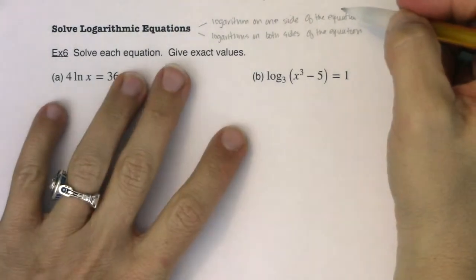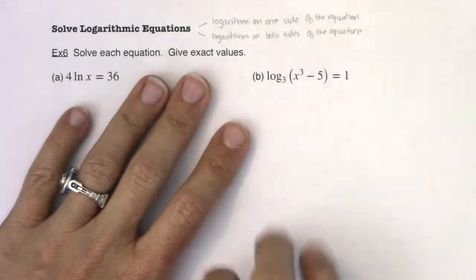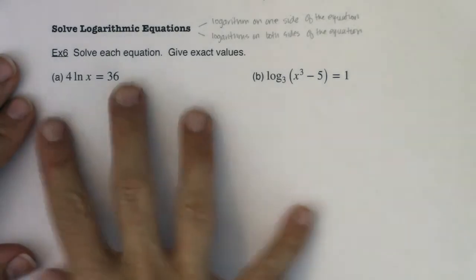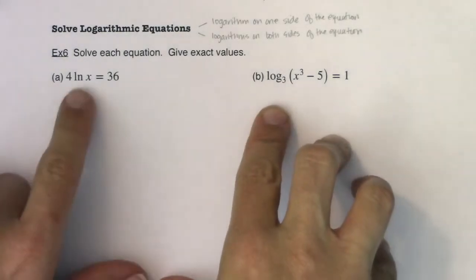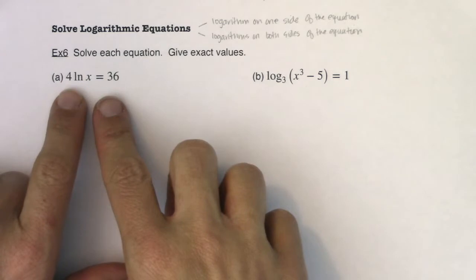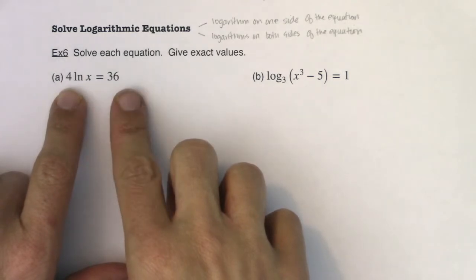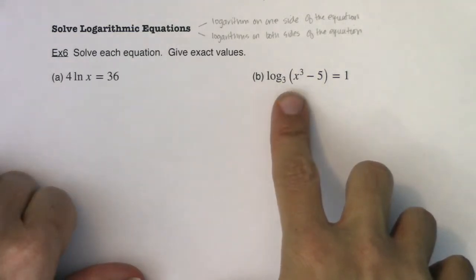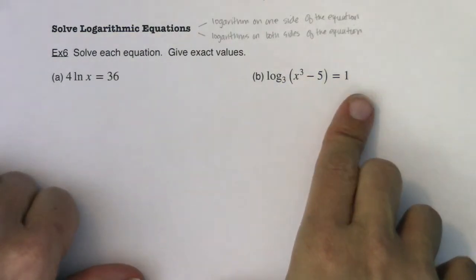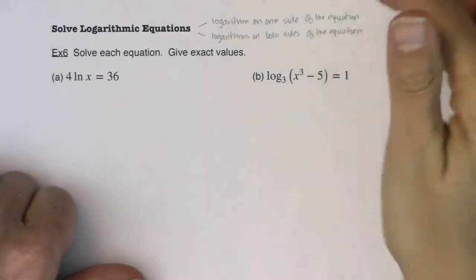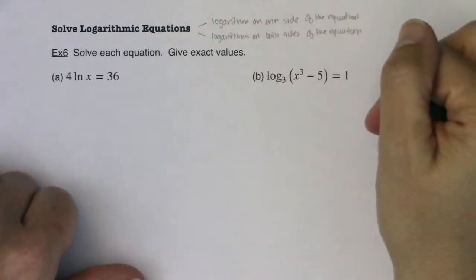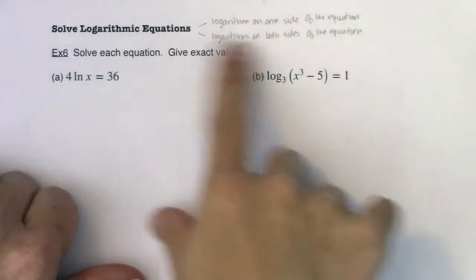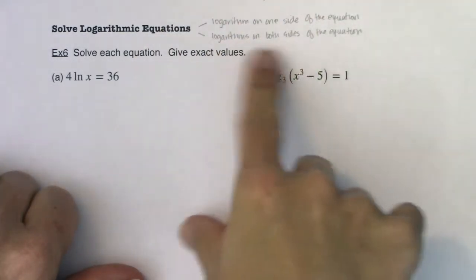We're going to solve both types of these logarithmic equations — it's just that they have different techniques involved. We want to solve each equation and give exact values, meaning no decimal approximations. In 6a, there's a log on one side of the equation and not the other, and the same is true for 6b. When that's the case, there is a certain technique for solving those equations, distinctly different from when there are logs on both sides.